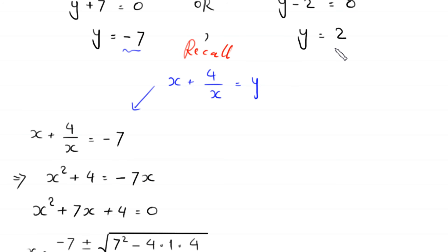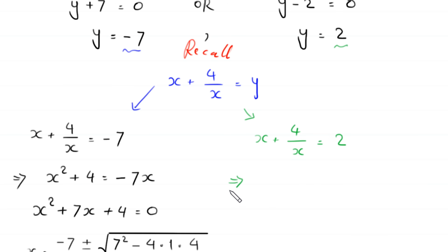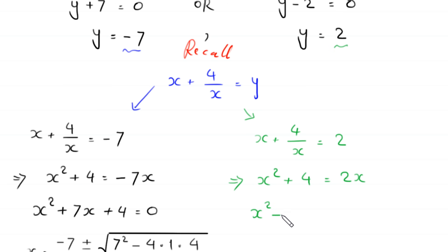When y equals 2, the equation becomes x plus 4 over x equals 2. Multiplying both sides by x gives x squared plus 4 equals 2x. Moving 2x to the left hand side gives x squared minus 2x plus 4 equals 0.